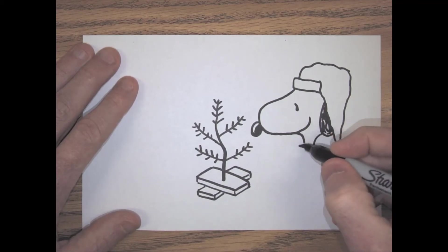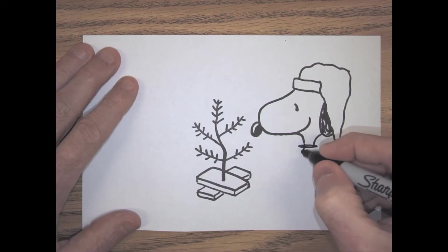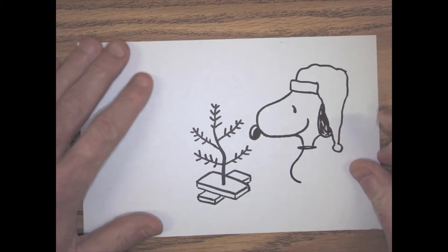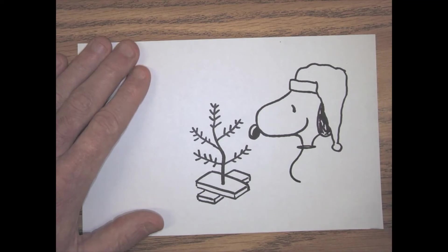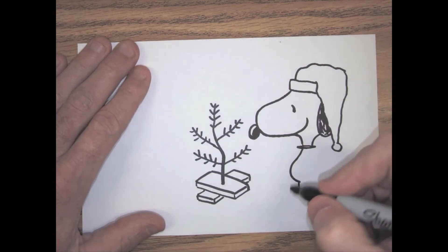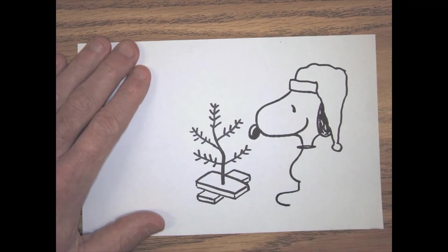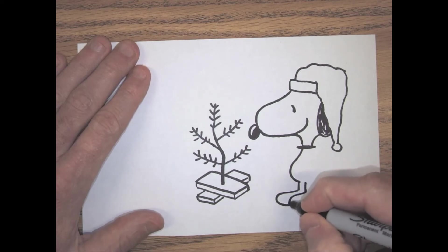His belly. His belly is pretty big. His belly is going to come down like this, so we'll go like this and around. And then he has two feet, so got to put on the legs. One leg will be there and it'll go out and around.